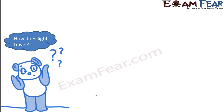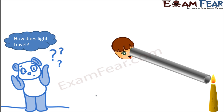Let us do this simple experiment to show light travels in a straight line. Take a burning candle — the flame produces light. If possible, darken the room so only the candle's light is present. Now take a hollow cylindrical tube and try to see through it. You will be able to see the light coming from the flame of the candle.